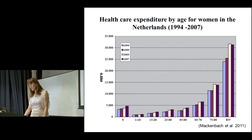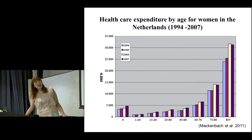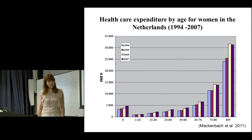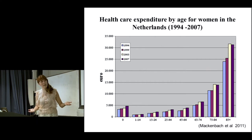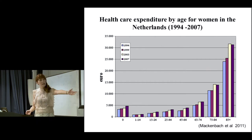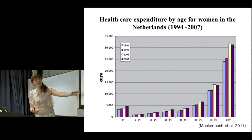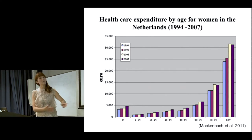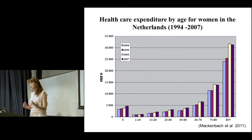Let's have a look at the data. This is health expenditure for women in the Netherlands, where they followed up women throughout their lives. At age zero you need healthcare — quite a lot — because of birth, neonatal intensive care, et cetera. You need some in the first year of life, you may have childhood infections and need care, and towards the latter years this looks like it seems to reflect need.